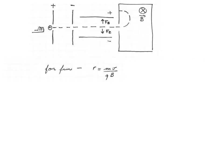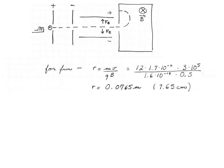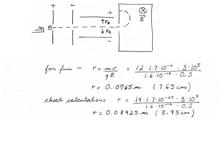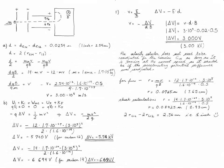Let's verify by checking the trajectory radii. Using R = mv/(qB), the radius of carbon-12 is 7.65 cm and the radius of carbon-14 is 8.93 cm. Then 2×r(C-14) minus 2×r(C-12) equals 2.56 cm, which corresponds to approximately 1 inch when accounting for rounding in the calculations. Here is the full solution on two pages.